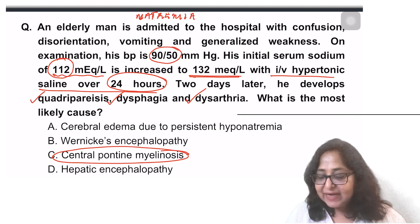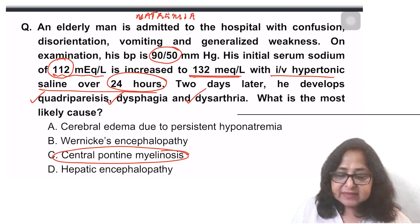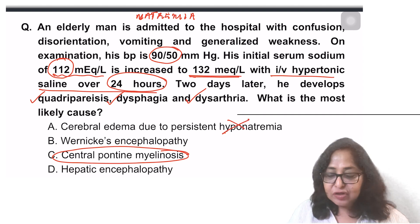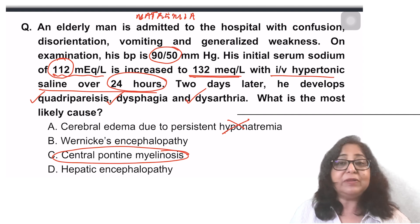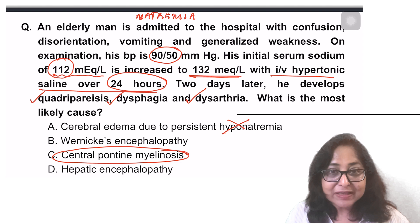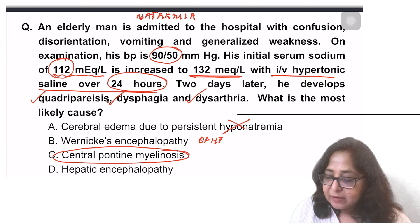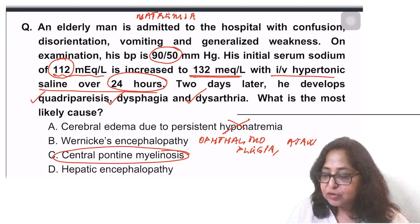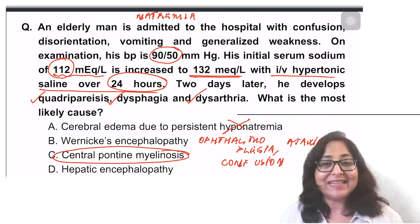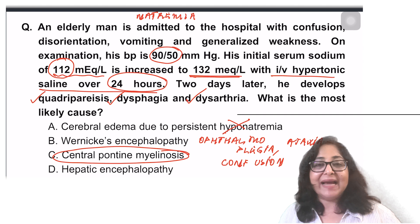The answer to this question is pretty simple. This is central pontine myelinosis. Let's look at the other options. Is there a cerebral edema due to persistent hyponatremia? No, hyponatremia has got corrected here. In Wernicke's encephalopathy, which is due to deficiency of vitamin B1, thiamine deficiency, the triad for Wernicke's encephalopathy is ophthalmoplegia, there is ataxia, and there is confusion. In hepatic encephalopathy, there should be a history of hepatic disease. So, best answer here is central pontine myelinosis.